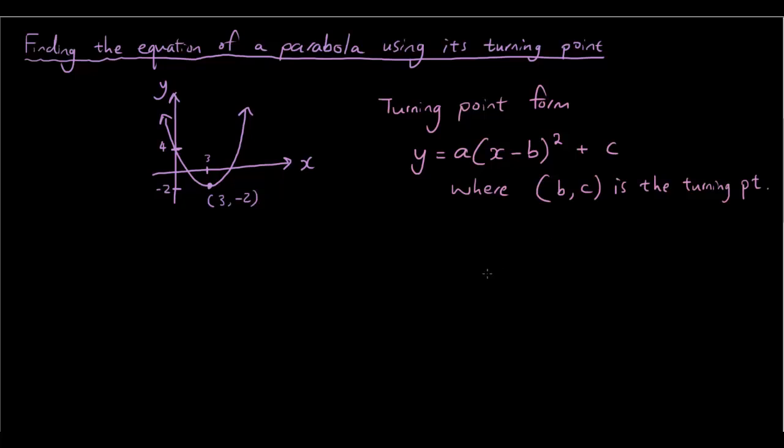So using that knowledge we can now substitute in the turning point that we have into the equation. So y equals a bracket x minus 3 squared plus negative 2. And now you can see that the only number left that we need to find is a.